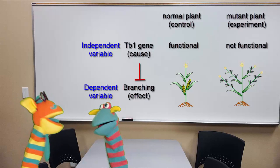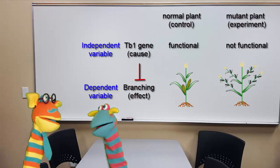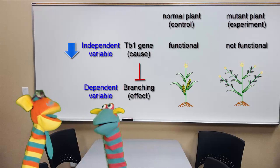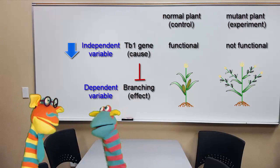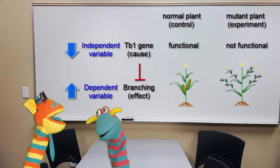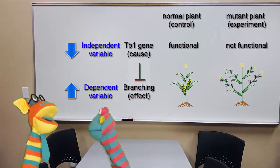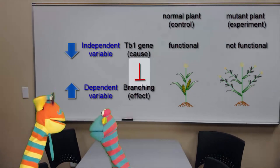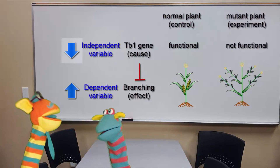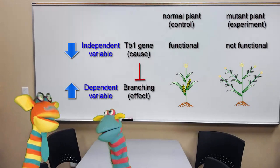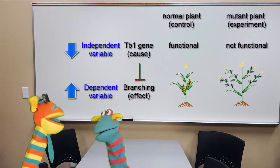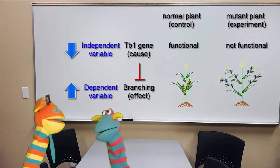Well done. In this experiment, you are taking away the gene, so the independent variable is decreasing. The outcome here is more branching, so the dependent variable is increasing. When the two variables are moving in opposite directions, you have an inhibitory connection. In this experiment, we took away the cause, so this is a loss-of-function experiment. It is used to test whether the cause is required or necessary to produce the effect.